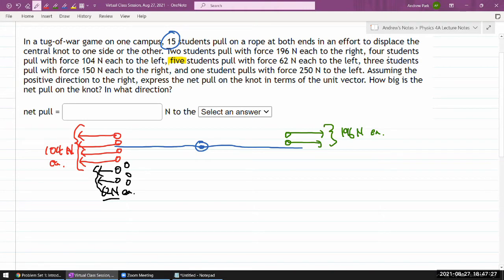62 each to the left. Three students pull with force 150 newton each to the right. Okay. I guess I'll use black again. Three students. One, two, three. And one student pulls with force 250 newton to the left. All right. One student with 250 newton to the left.